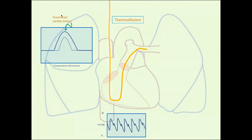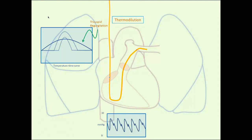With tricuspid regurgitation, the saline bounces and sloshes back and forth, washing very slowly across the thermistor, producing a completely invalid, long, drawn-out temperature-time curve that is meaningless. Shunting will do this as well—right-to-left or left-to-right—diluting out the temperature change and creating a slurred temperature-time graphic not representative of cardiac output. In that situation, you would use the Fick cardiac output or mixed venous oxygen as an indicator of cardiac output.